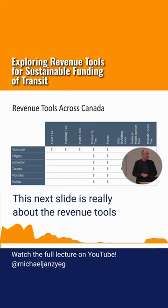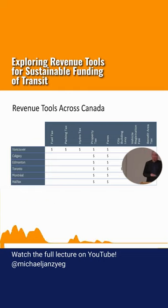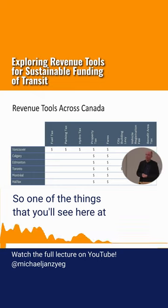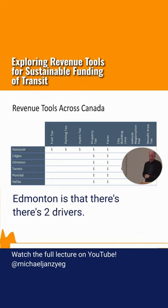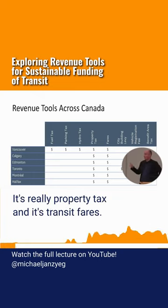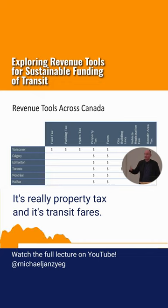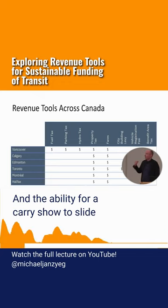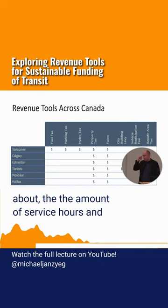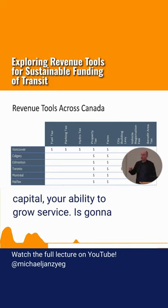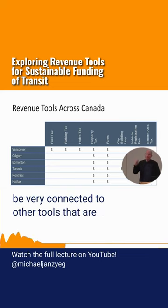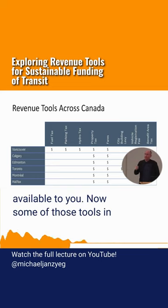This next slide is really about revenue tools across Canada. One of the things that you'll see here at Evanston is that there's two drivers — it's really property tax and ramping errors. And the ability for care issues about the amount of service hours per capita. Your ability to grow service is going to be very connected to other tools that are available to you.